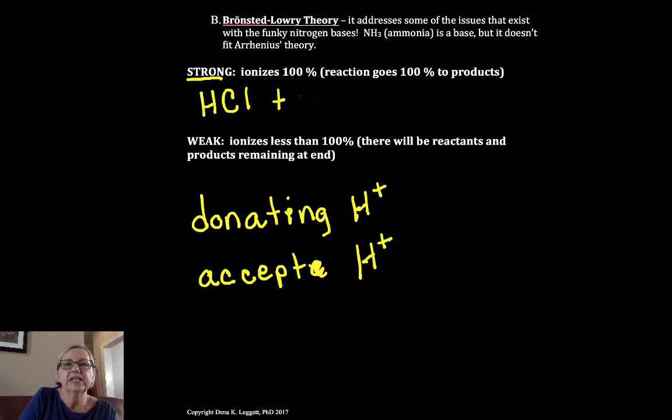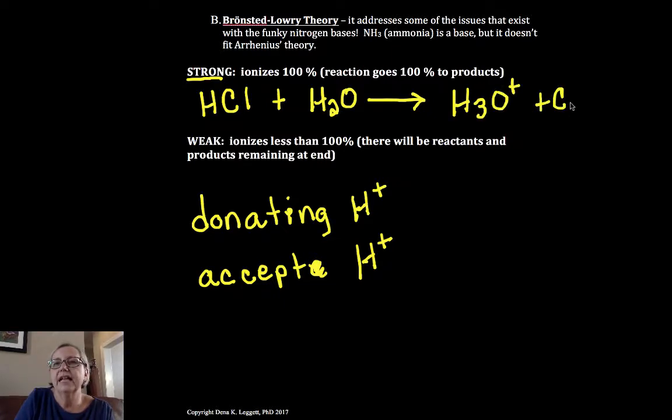For example, hydrochloric acid reacts with water and goes effectively 100% to form H3O+ plus Cl-. In this case, the HCl donated that H+ to the water to form that hydronium ion.